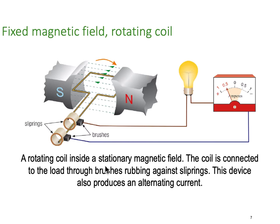Electrically, we have a rotating coil inside a stationary magnetic field. The coil is connected to the load through slip rings and carbon brushes pressing against brass rings, which can bring the current out through a lamp. This arrangement also produces an alternating current, so we need to convert that alternating current back into a direct current that always flows in the same direction.